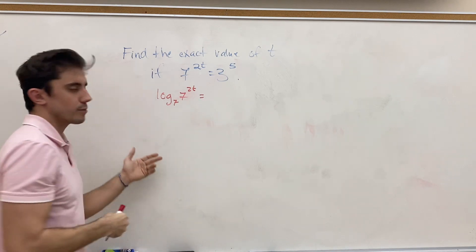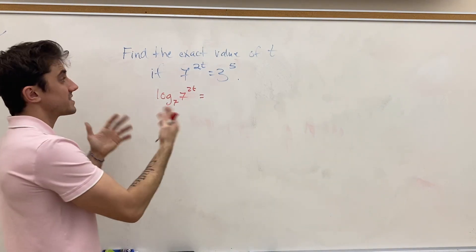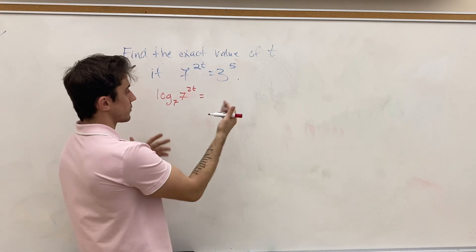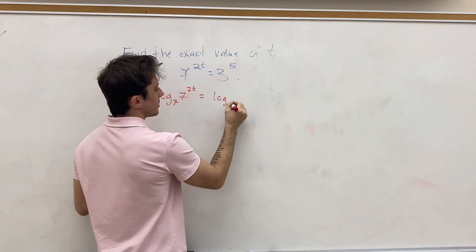the same as multiplying both sides by 1, adding 0 to both sides, we can take a log base 7 of both sides. And so we have log base 7 of 3 to the 5.